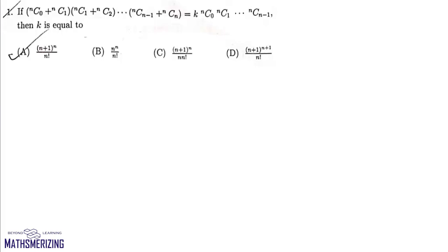Today we will discuss ISI's 2021 QROR objective paper. The first question is: if NC0 plus NC1 into NC1 plus NC2 up to NCN minus 1 plus NCN equals K into NC0 NC1 NCN minus 1, we need to find the value of K.